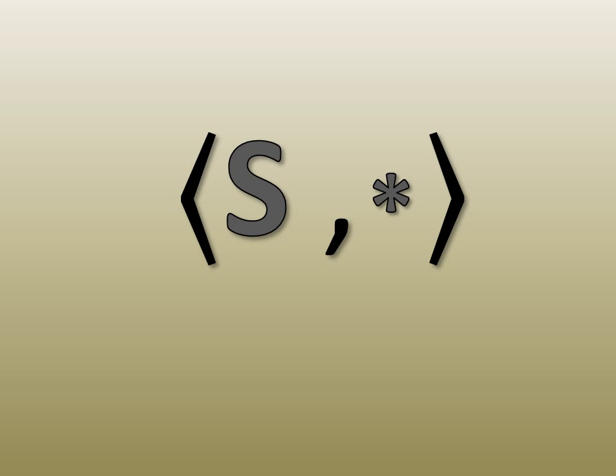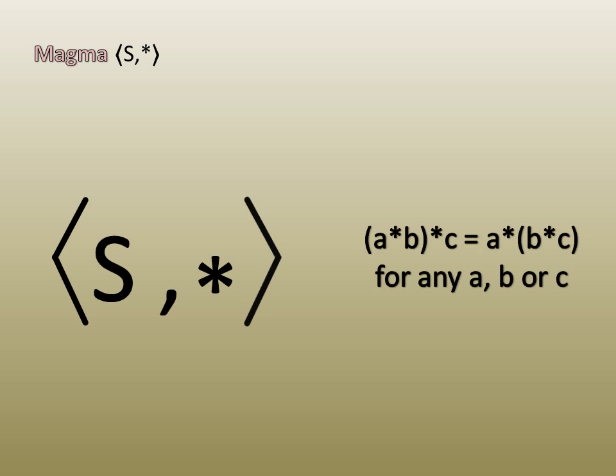First, consider a single set coupled with a single binary operation. This algebraic structure is called a magma. This is extremely general, too much so for an introduction. Next, we consider magmas with associativity. These structures are called semi-groups.